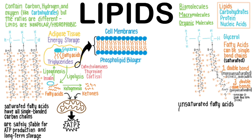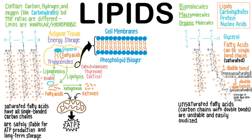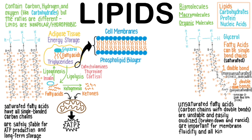Unsaturated fatty acids are carbon chains with one or more double bonds. As the number of double bonds in the molecule increases, they become increasingly unstable, reactive, and easily oxidized — meaning broken down and rancid. These delicate molecules are important for membrane fluidity, as well as all kinds of complex signaling, especially with regard to inflammatory responses.